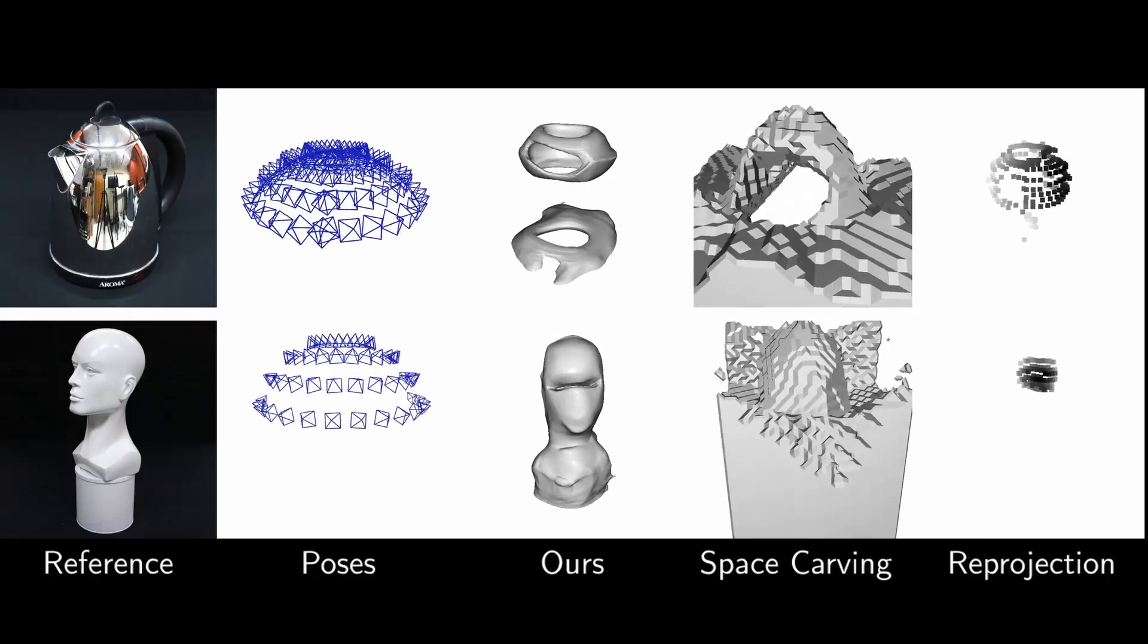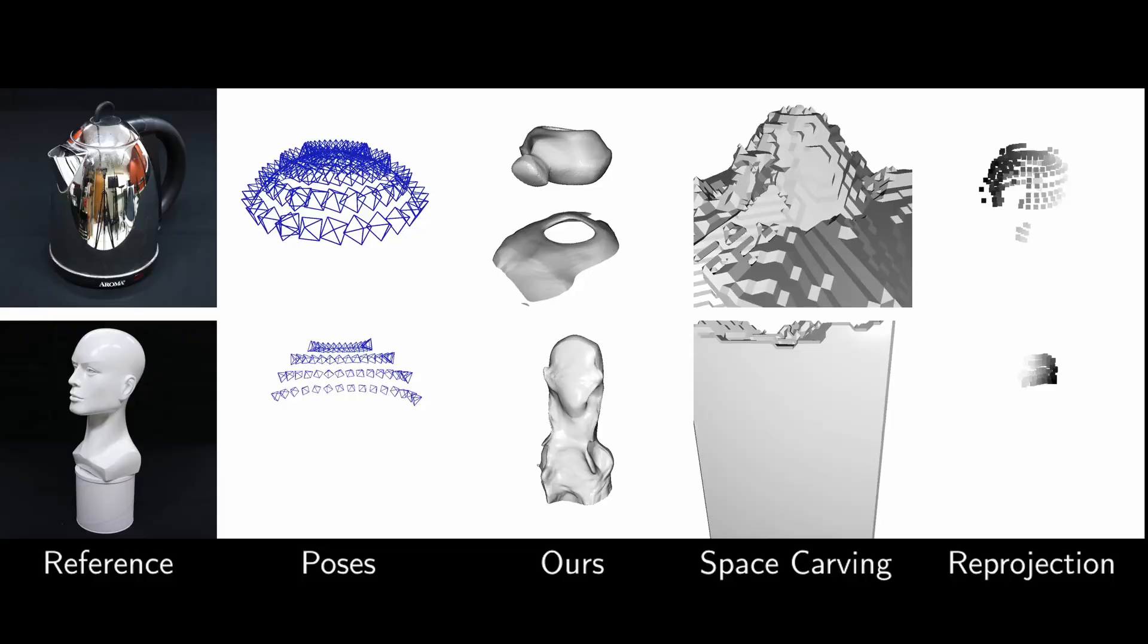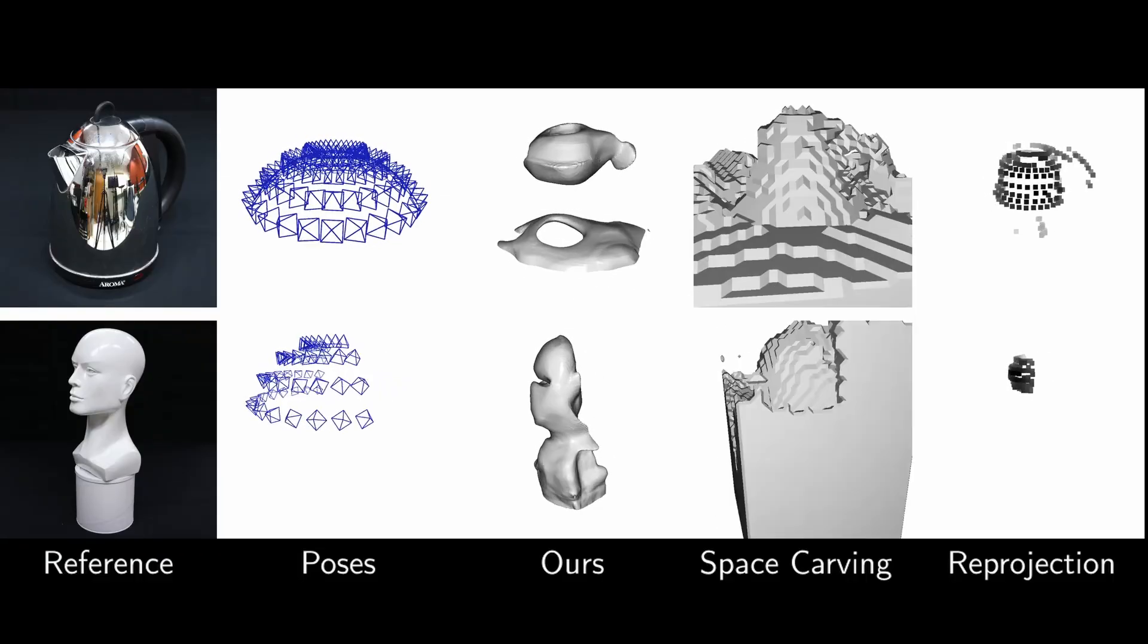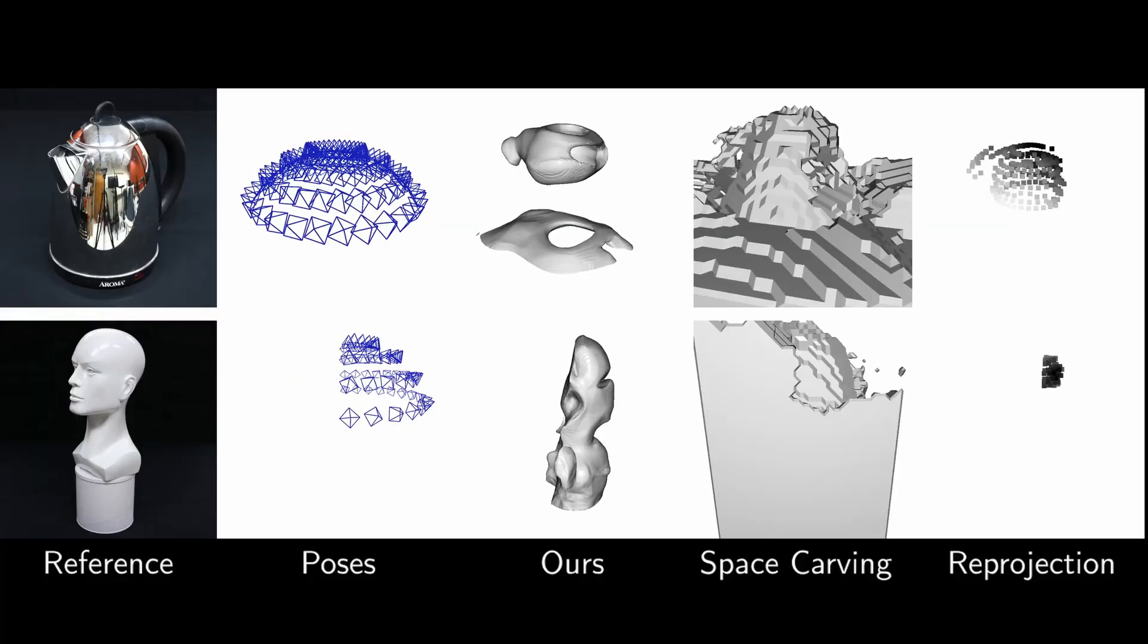There are some cases where our method does not perform well. Because we assume a Lambertian surface, highly reflective objects cause inaccurate results. Future work may be able to alleviate this problem by learning spatially varying scene reflectance.